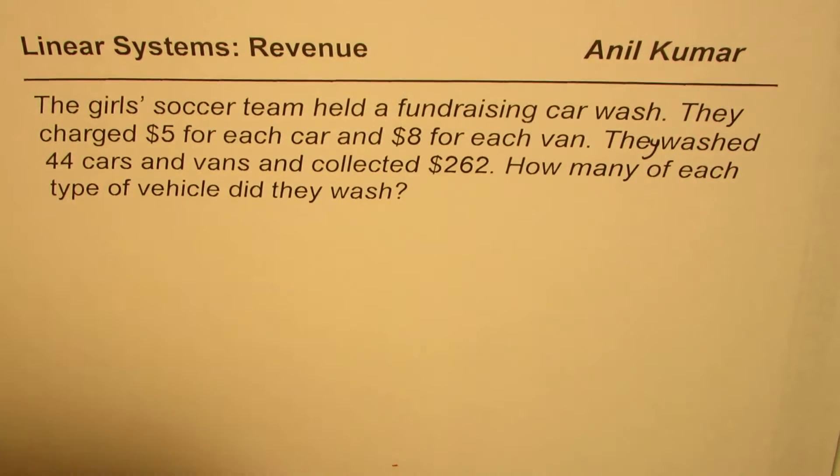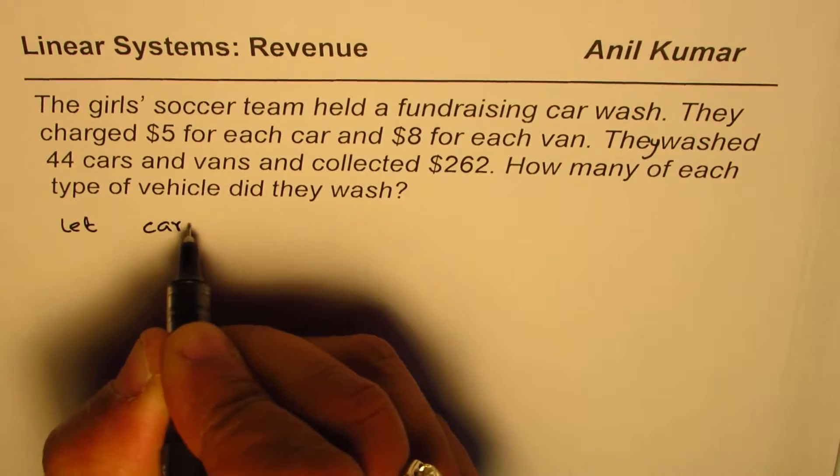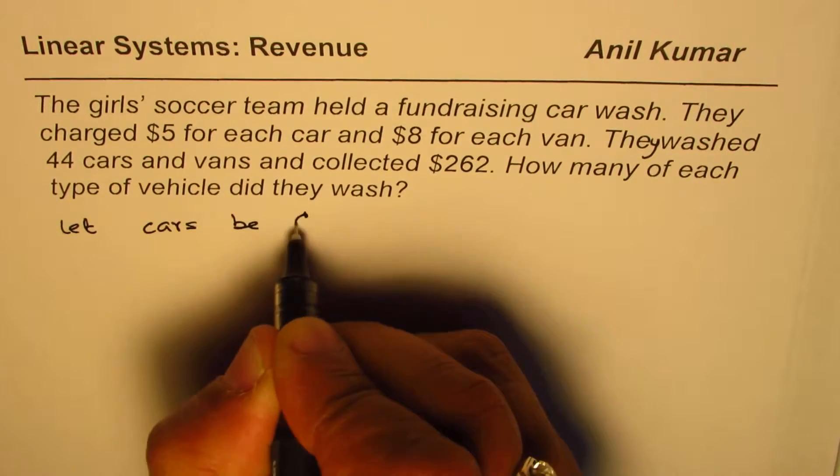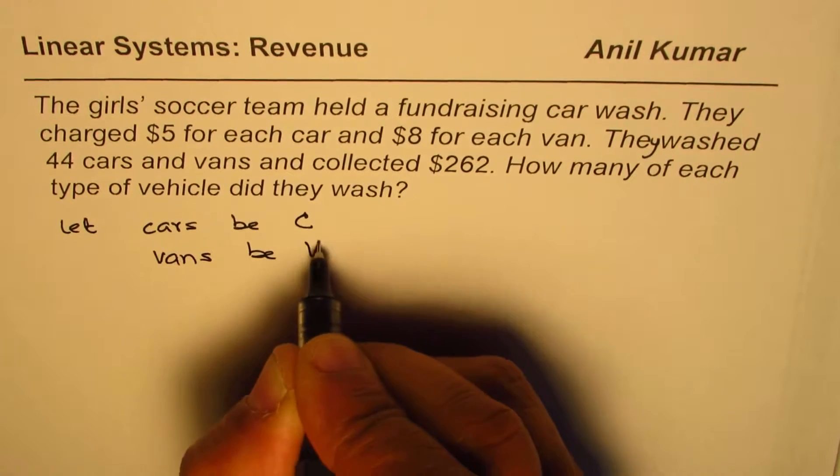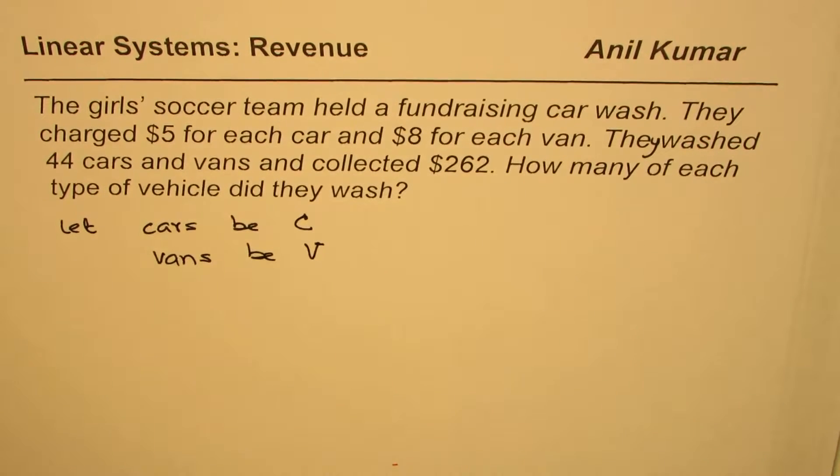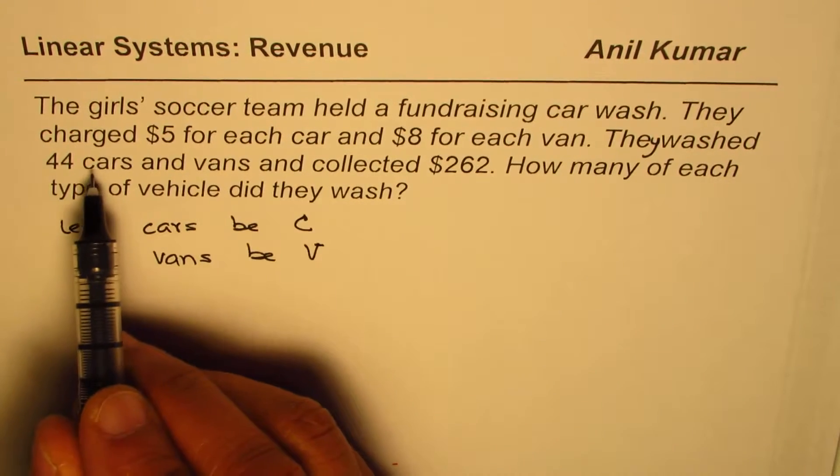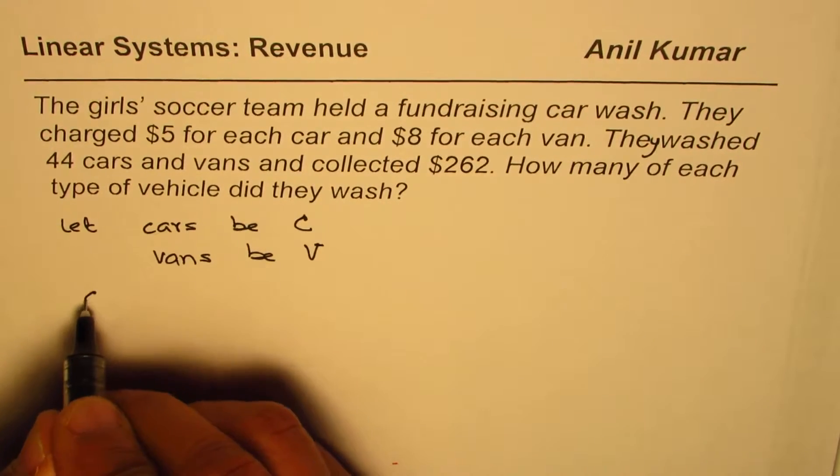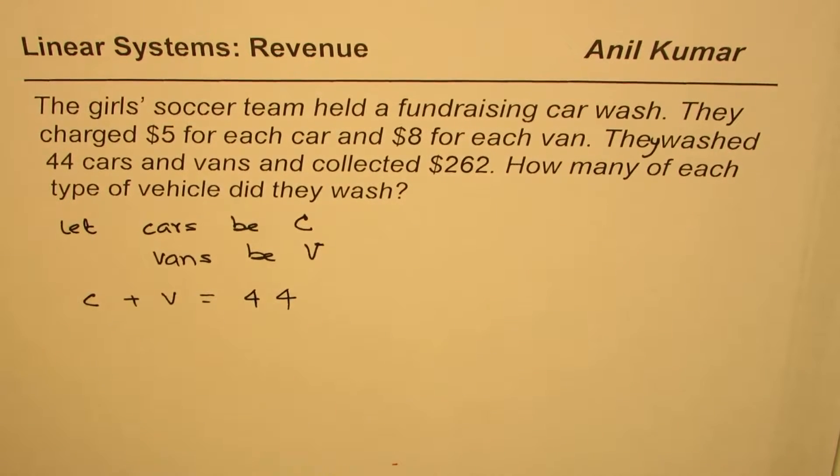Let's define the variables. Let cars be C and vans be V. They washed 44 cars and vans total, so C plus V equals 44. This gives us our first equation.